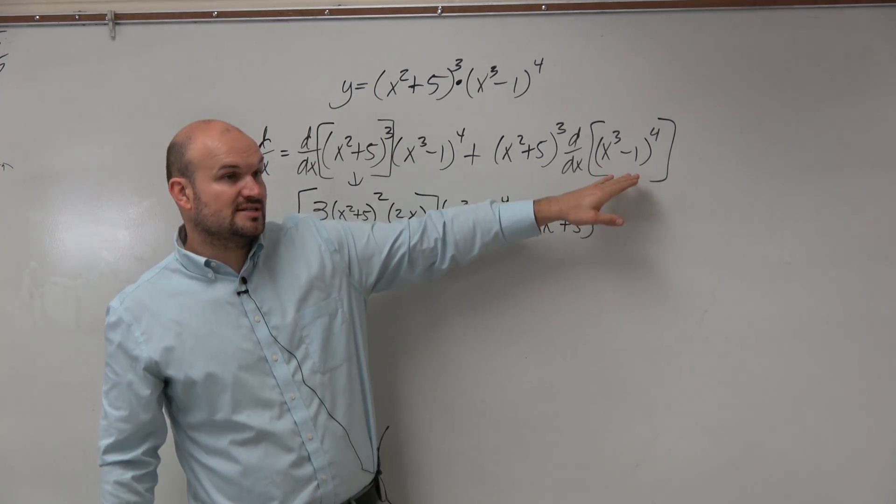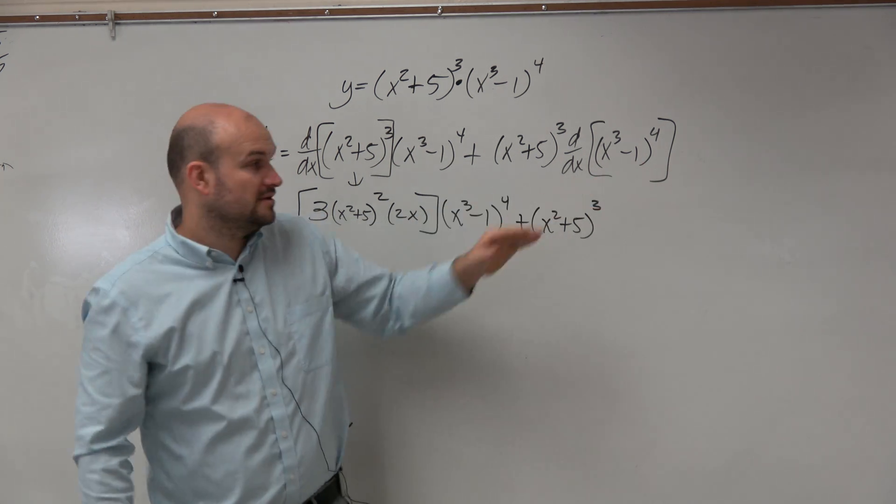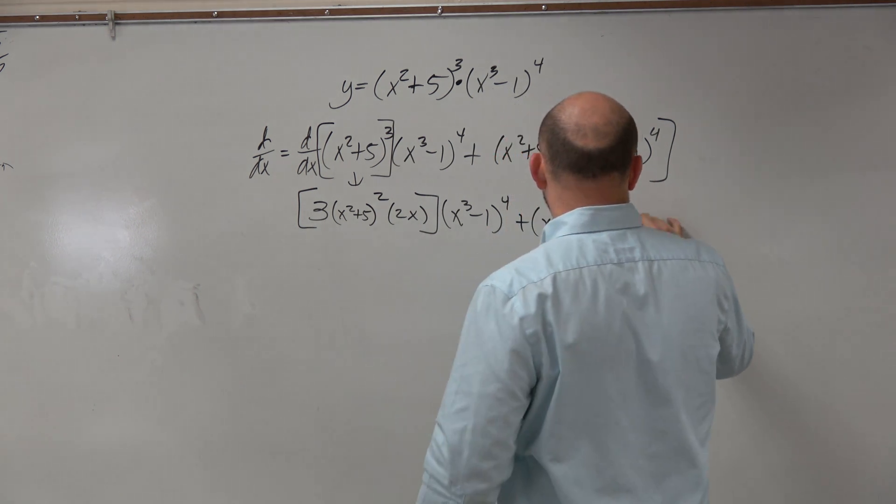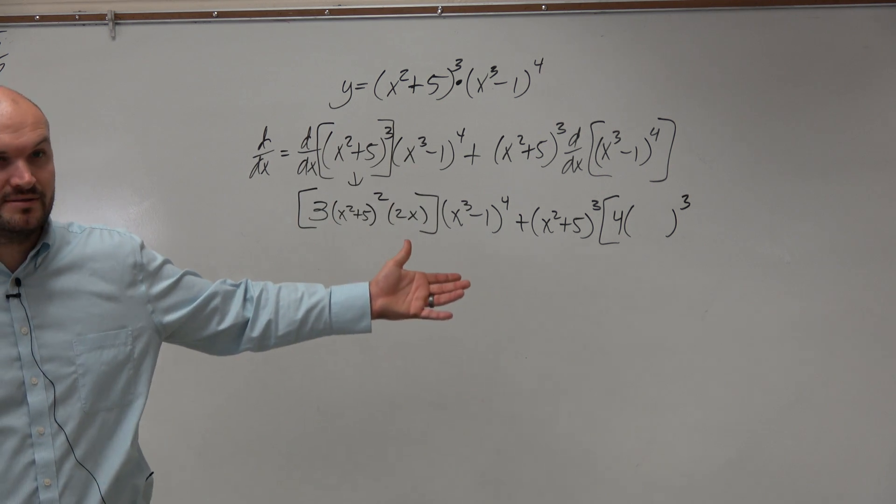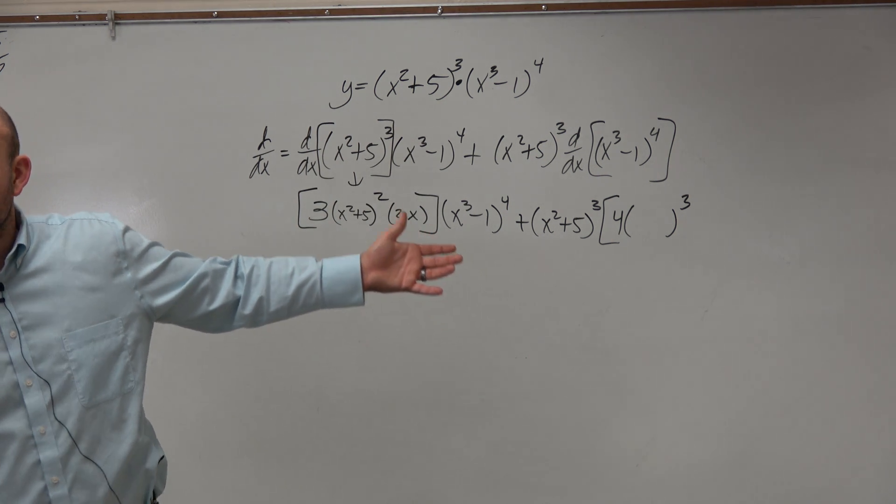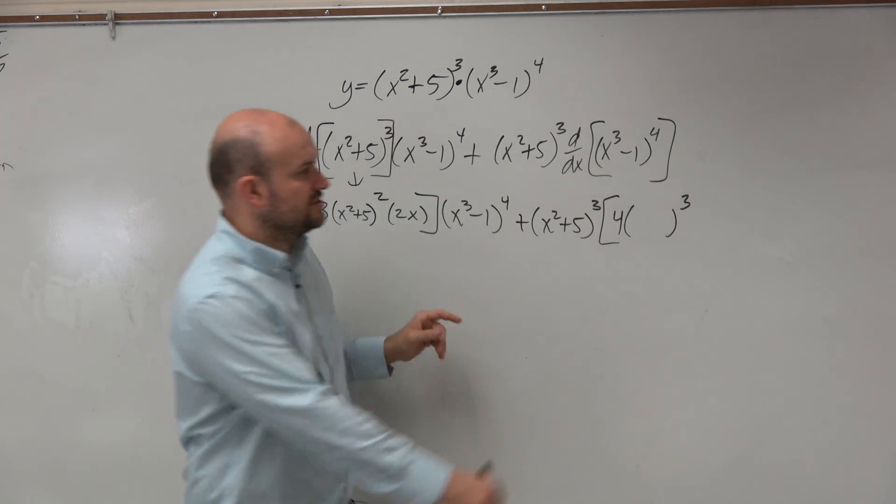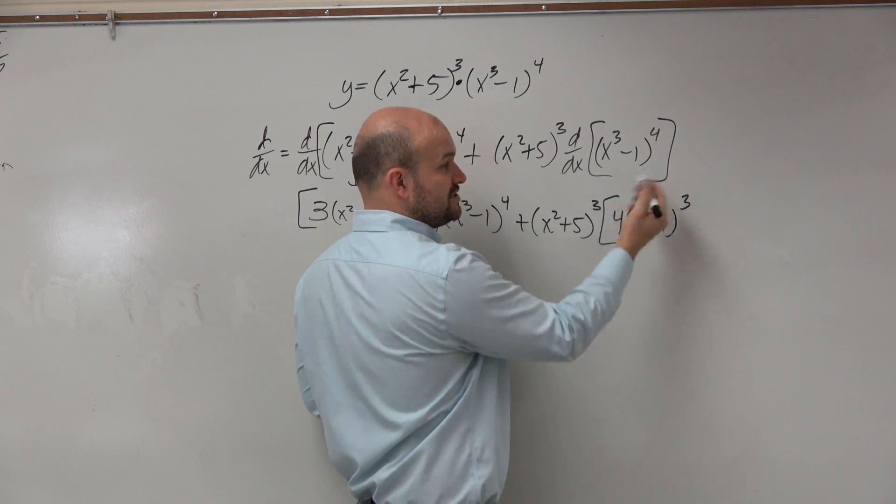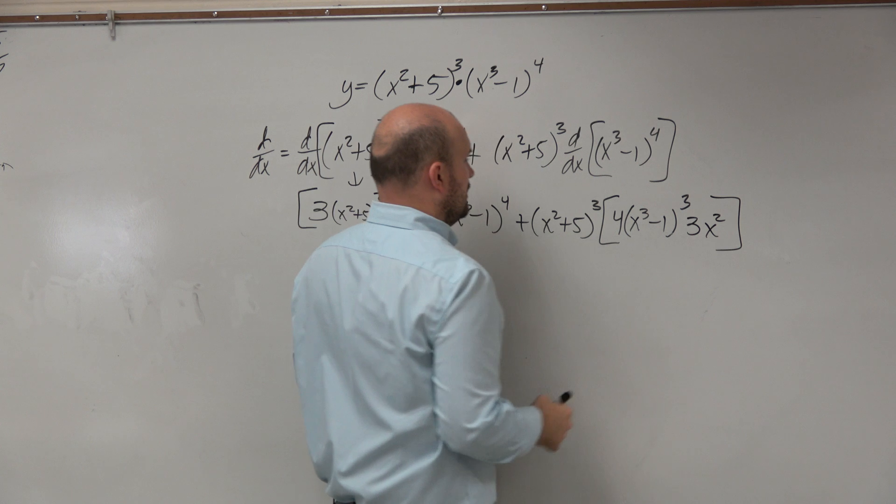What is the parent function of this one? x to the 4th. So if I'm going to do that, I'm going to do 4 times x to the 3rd. Would everybody agree that's the derivative of my parent function? Does everybody see that? That's the derivative of my parent function. Then I plug in my child function, which is x cubed minus 1, times the derivative of my child function, which is 3x squared.